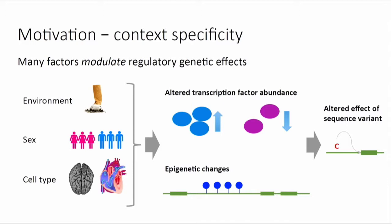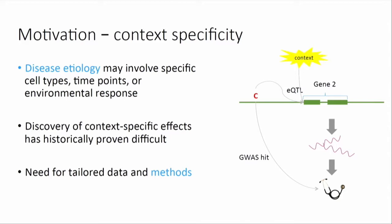The first, and one that my lab thinks a lot about, is that the effects of genetic variation are often quite context-specific. Many factors modulate regulatory genetic effects, including things like environmental factors, differences between the sexes, differences between cell types and tissues that lead to things like varying levels of transcription factors or longer-term epigenetic changes that then alter the effect of a particular sequence variant — which genes, when, or how it changes gene expression. All of these contexts can actually alter the effects of genetic sequence. That may actually be important to understanding disease, as a particular disease may involve very specific cell types, very particular time points, or environmental response, such as response to an infection.